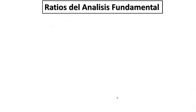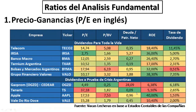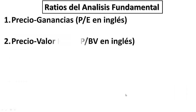Existen infinidad de ratios para conocer si una acción está barata o no, pero los más importantes son: precio sobre ganancias (P/E en inglés), que muestra cuántos años de ganancias son necesarios para cubrir el precio de la acción. Por ejemplo, una acción que vale 10 y la compañía gana 1 por año necesitará 10 años para cubrir la inversión. Mientras más bajo sea este índice, más atractivo será el precio. Al comparar distintas compañías, las más atractivas en términos de P/E son IRSA y Gazprom.